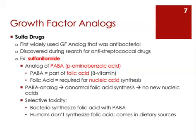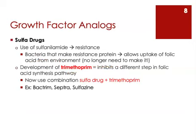This is the way all of the growth factor analogs work — they interfere with normal metabolic pathways. Sulfanilamide has selective toxicity because while bacteria have to synthesize their folic acid and need PABA to do that, human beings don't make their folic acid. Human beings actually consume their folic acid in the diet, so this growth factor analog doesn't affect human cells the way it would affect bacterial cells.